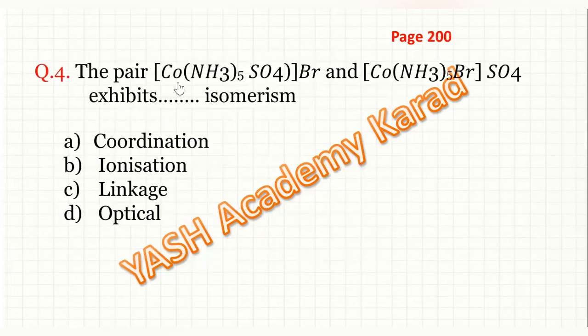Next, the pair Co(NH3)5SO4 and Co(NH3)5BrSO4 exhibits which type of isomerism? So correct option of this question is B, that is ionization isomerism.